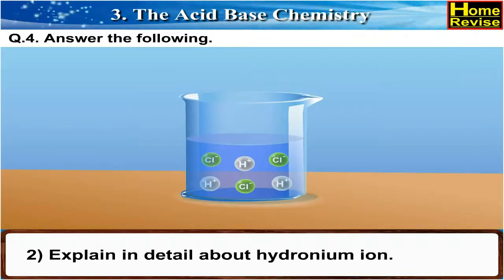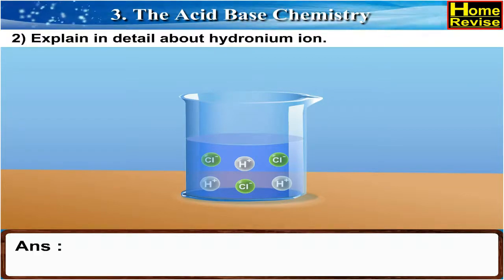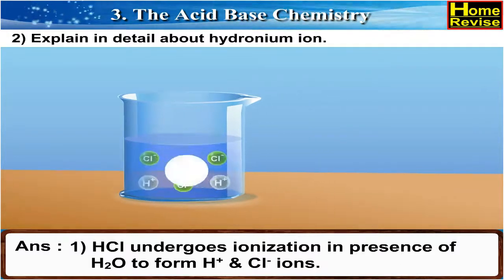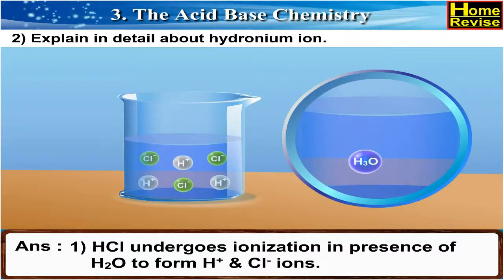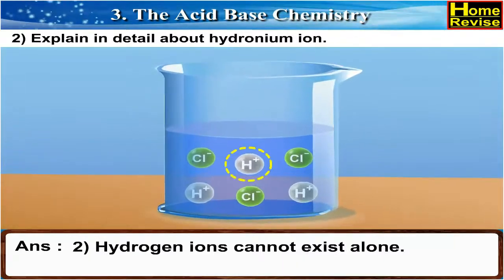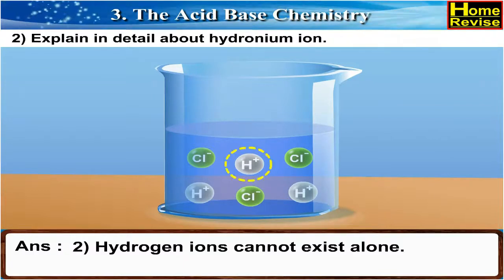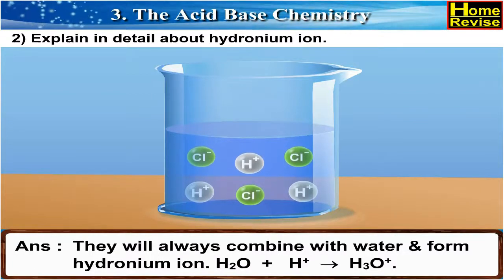Question 2: Explain in detail about hydronium ion. HCl undergoes ionization in the presence of H2O to form H+ and Cl- ions. Hydrogen ions cannot exist alone.